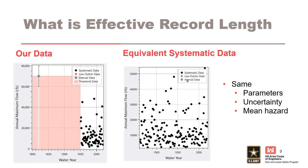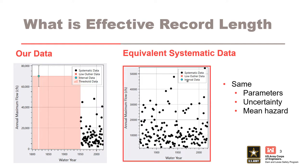Before we talk about a more technical definition of effective record length, let's start with a basic example. This slide shows two inflow records for a dam. On the left, we have a typical data set that includes some systematic data, some flow interval data for historic flood, and a perception threshold representing periods where there were unobserved flood events. On the right-hand side, we can see a data set that only consists of systematic data.